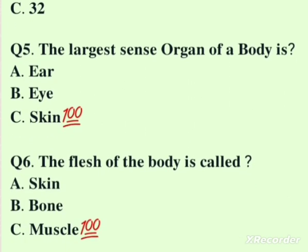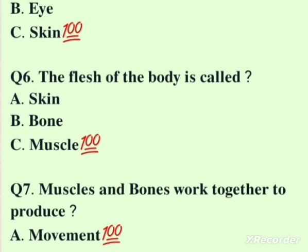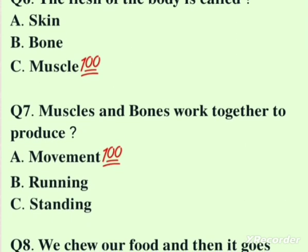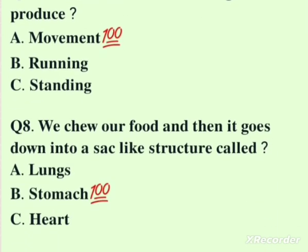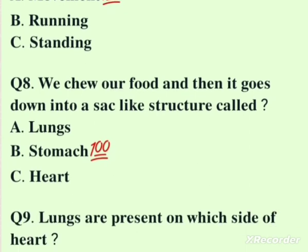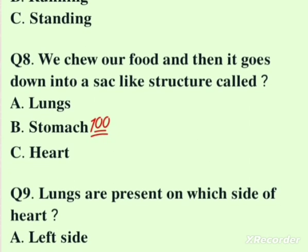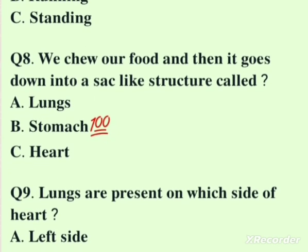The largest sense organ of the body is the skin. The flesh of the body is called muscle. Muscles and bones work together to produce movement. We chew our food and then it goes down into the sac-like structure called the stomach.